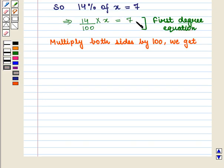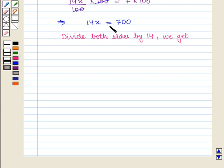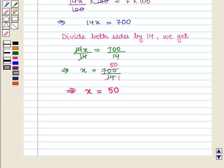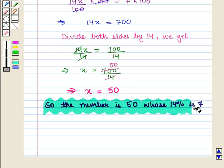To solve it we multiply both sides by 100 and we get 14x/100 × 100 = 7 × 100. This implies that 14x = 700. To find the value of x we divide both sides by 14 and we get 14x/14 = 700/14. Here 14 × 1 is 14 and 14 × 50 is 700. So this implies that x is equal to 50. So we say that the number is 50 whose 14% is 7.